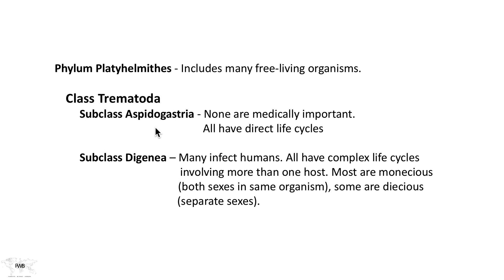The subclass Diogenia contains around 6,000 species of trematode infections of cold- and warm-blooded vertebrates. Now, most of those, fortunately, don't infect humans, but the ones that do take their toll on the way we carry out our daily lives throughout the world. And as we'll see, some of them are quite serious diseases, indeed.